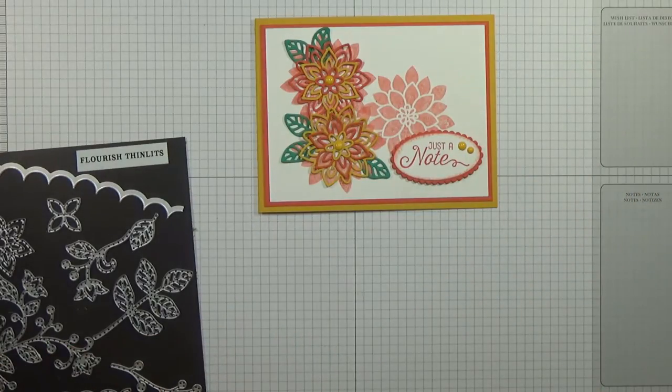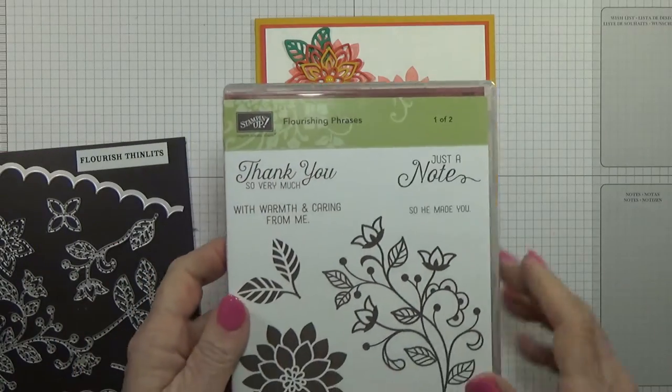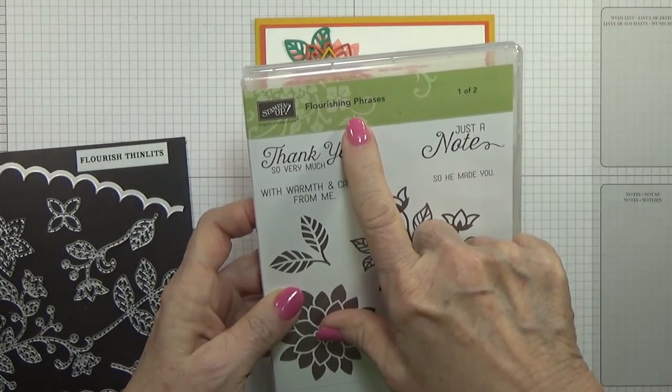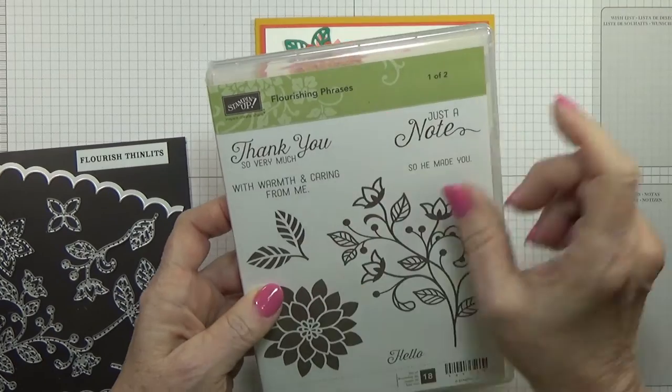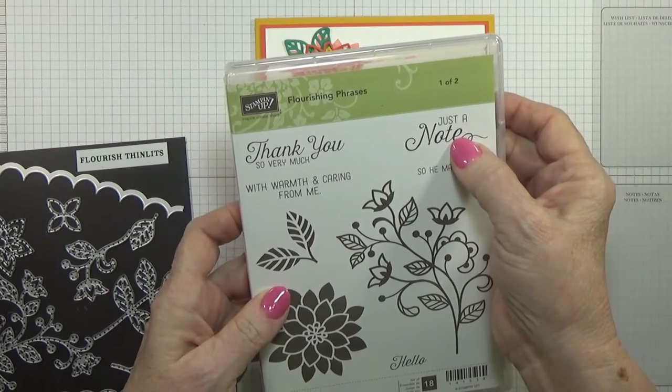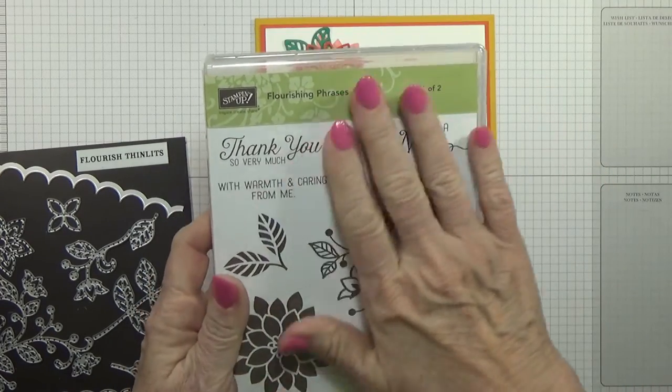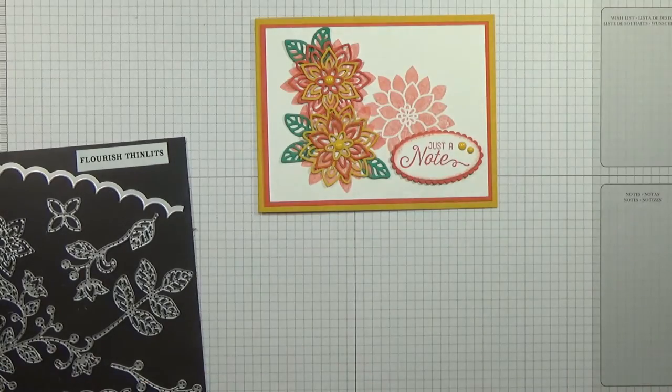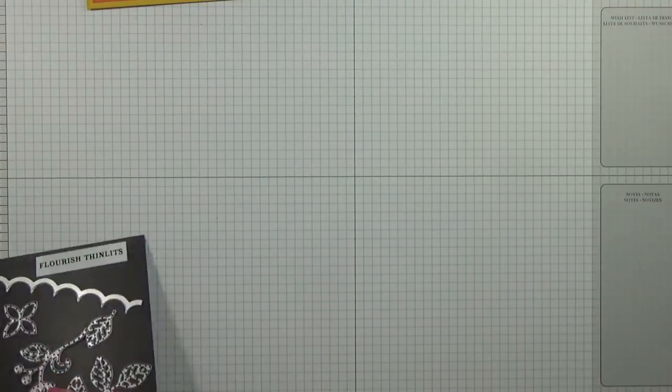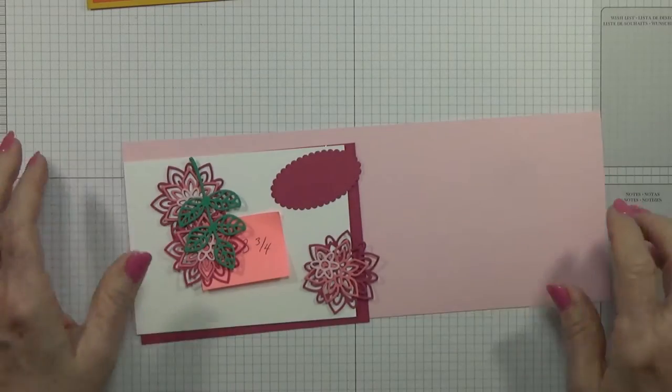The stamp set that I used is called Flourishing Phrases and I used Just a Note. So let's go ahead and get started on this.